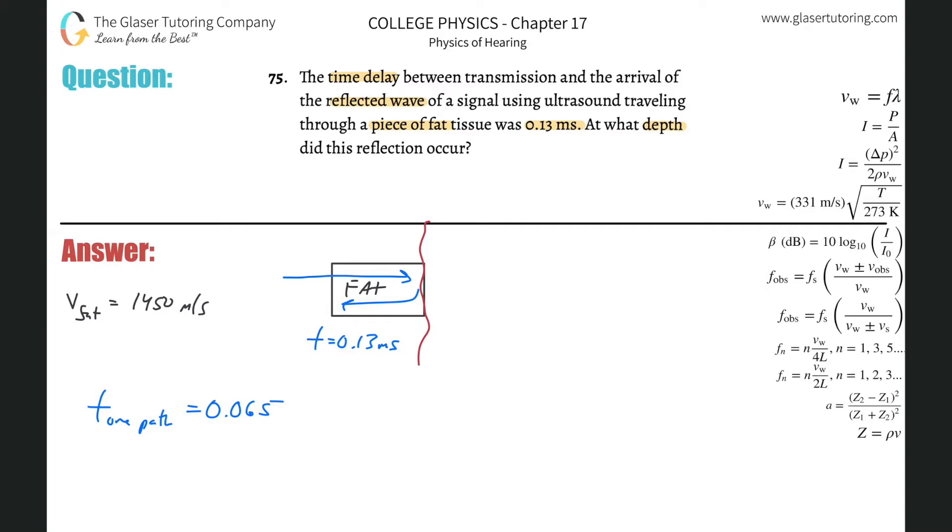And now what we realize then is that if this is the time it took, and we also need to look this up, the velocity of ultrasound in fat is about 1450 meters per second, we can simply do velocity equals distance over time. We're going to solve for distance, so cross multiply, distance equals vt.